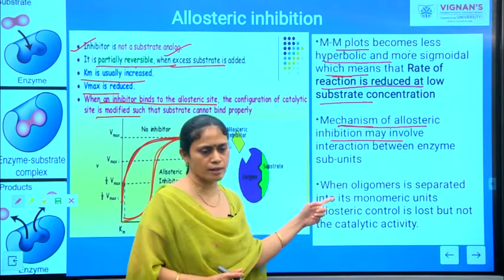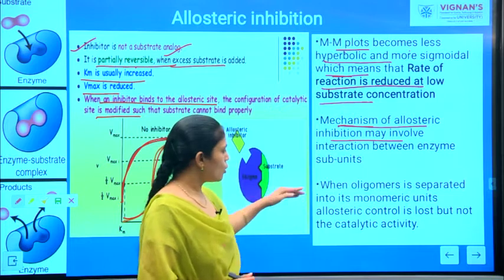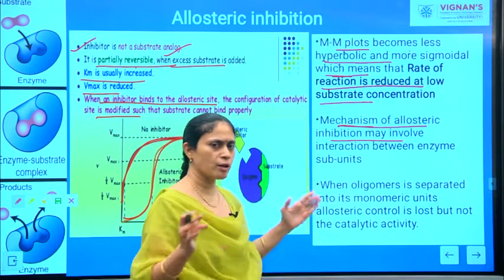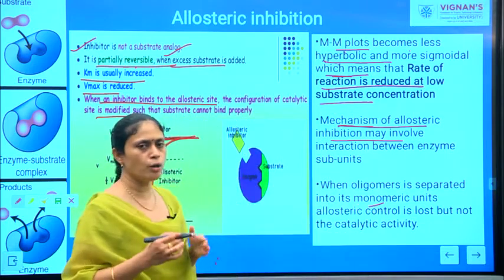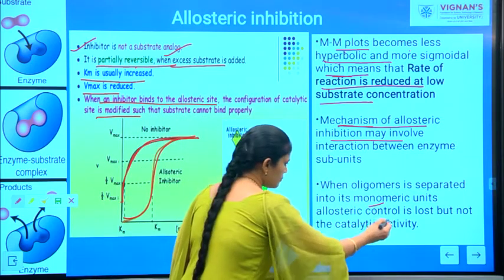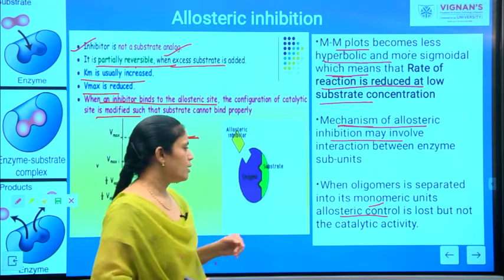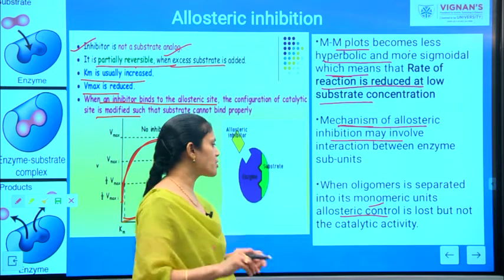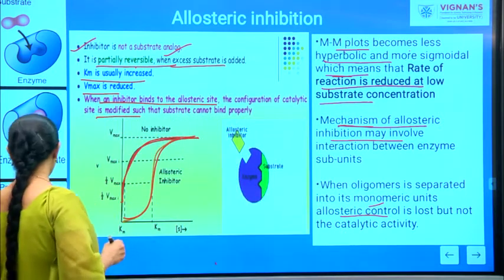Because of this, if you consider that the enzyme is a polymer — a protein — when you consider oligomers and separate them into monomer units, there will be a change in your allosteric control but not in the catalytic activity. Your allosteric control will be lost but there won't be any change in catalytic activity.